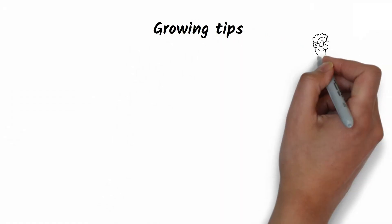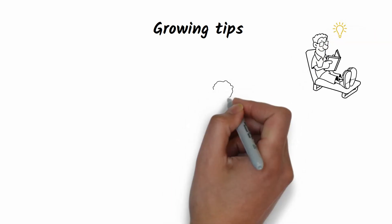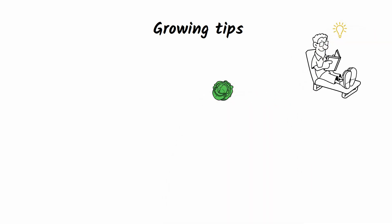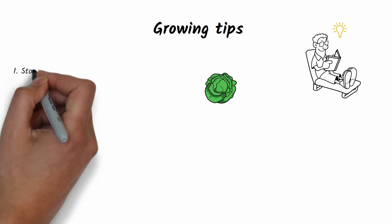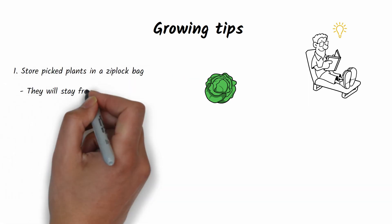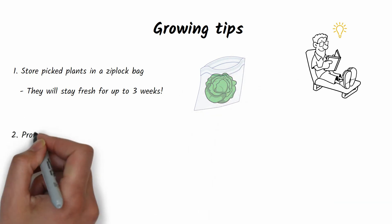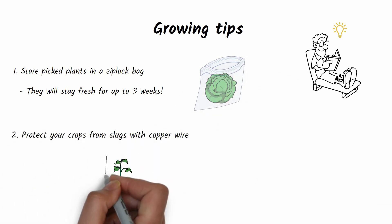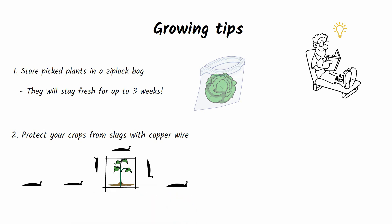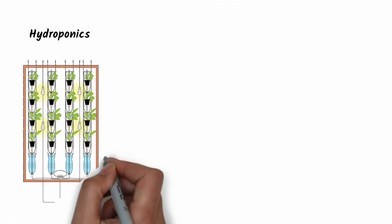Finally, a few more growing tips. Plants grow faster in a hydroponic system. For example, lettuce can be grown hydroponically in as little as 21 days. Once picked, store it in a ziplock bag. It will stay fresh for up to three weeks.